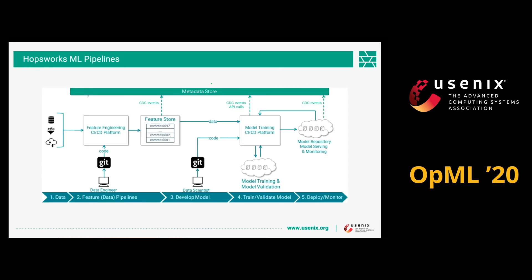This is how an ML pipeline looks in HopsWorks. The feature store feeds data into model training, and all models are saved in a model repository, which can be loaded to be served to different applications. All of these components trigger change data capture events that are captured and pushed into our provenance layer in the metadata store.